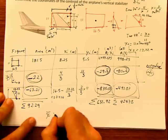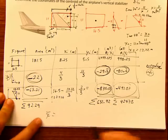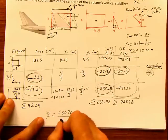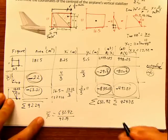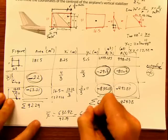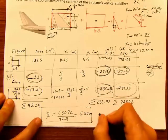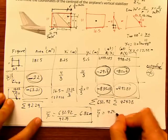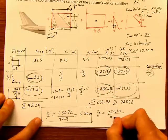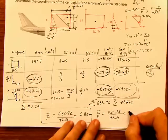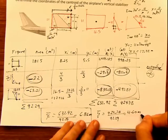Meaning that my x bar is going to be this divided by this. 632.92 divided by 92.29. That is 6.86 meters x bar. And my y bar is going to be 424.78 divided by 92.29, which gives us a value of 4.60 meters also.